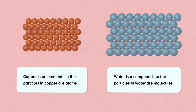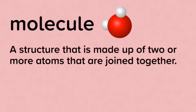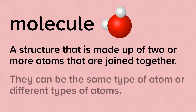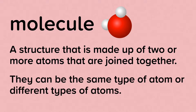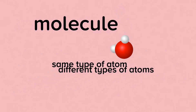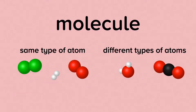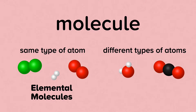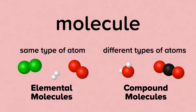Now let's look at the definition of a molecule. A molecule is a structure that is made up of two or more atoms that are joined together. They can be the same type of atom or different types of atoms. On the left we can see elemental molecules made of the same type of atom. On the right we can see compound molecules made of different types of atoms.